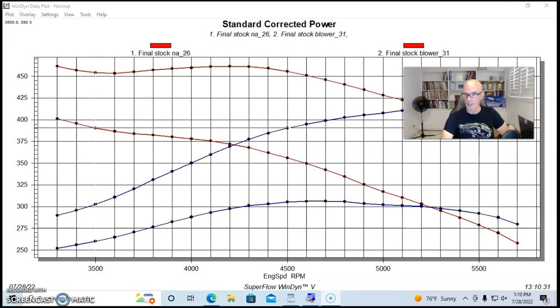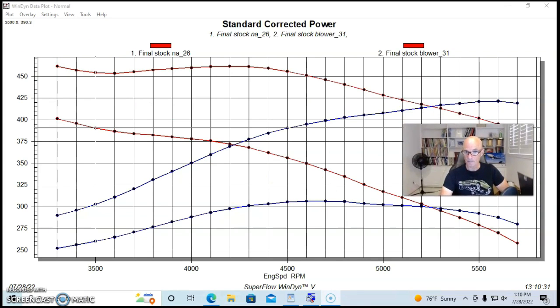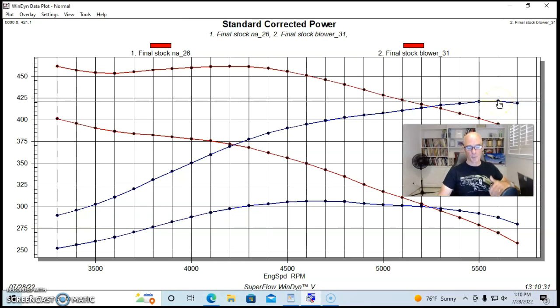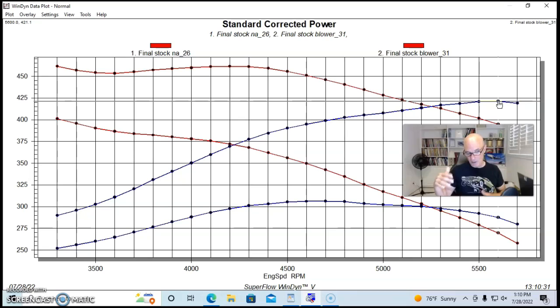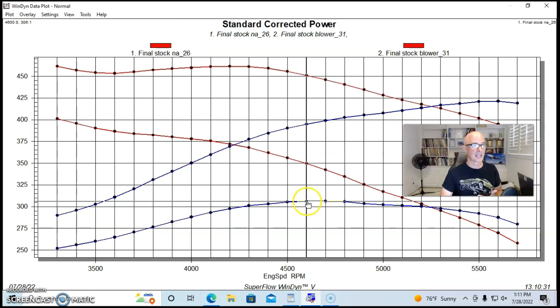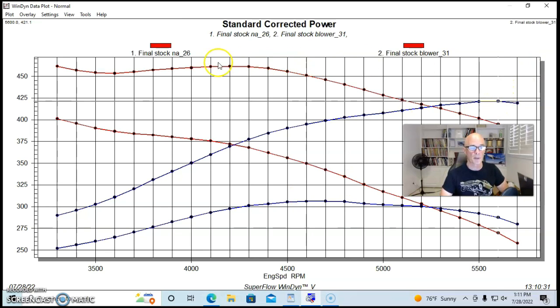Here's what happened when we added boost to this stock-ish combination - it is a 347 but stock heads, cam, and GT40 intake manifold. The Vortex supercharger was equipped with a 3.8 inch blower pulley and a 6.75 inch crank pulley, an S-trim. We had a mixture of 91 and 100 octane fuel so we could run enough timing. This produced a peak of eight pounds of boost at the top, down low it started out about 2.5 or 2.6 pounds of boost below 3500 RPM.